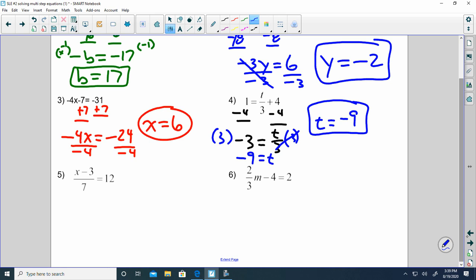I only have a whole quantity on bottom. So what I'm going to do, this is division, so I'm going to multiply both sides times 7. Add 3 to both sides of the equal sign. So I get x is equal to 87.